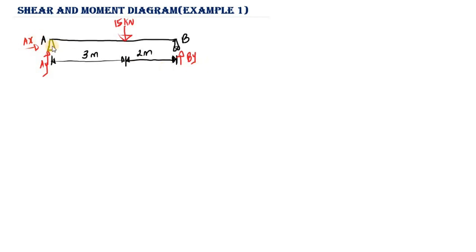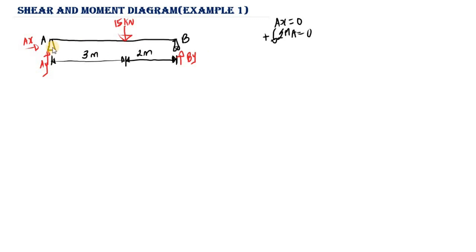Ax is automatically equal to zero because we don't have any horizontal load acting on this beam — we only have vertical loads. Now let's solve for Ay and By. To solve for By, I'm going to take the summation of moments at point A equal to zero. All moments in the counterclockwise direction are positive, and all moments in the clockwise direction are negative.